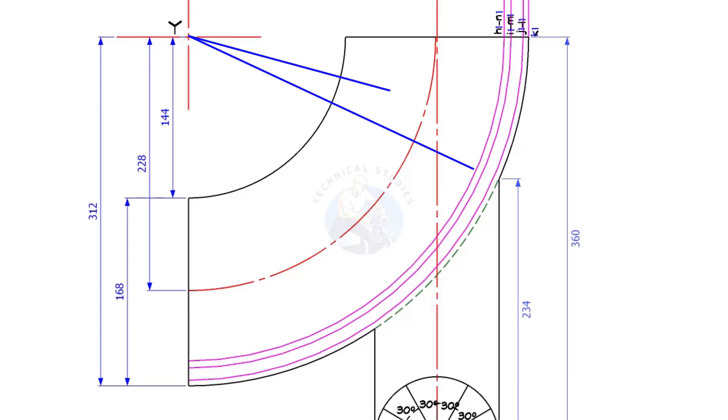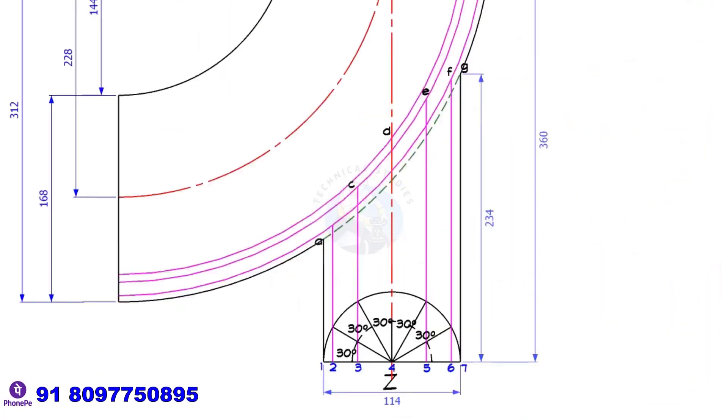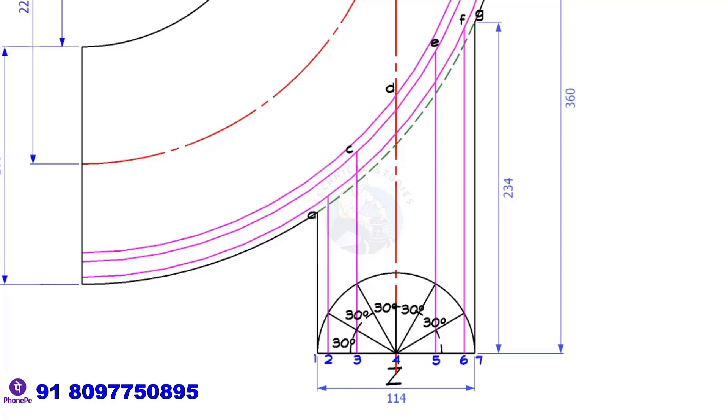Draw arcs centring Y, as shown. Draw lines 6F, 5E, 3C, 2B, intersecting the arcs.